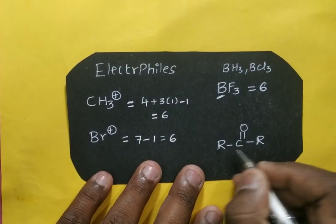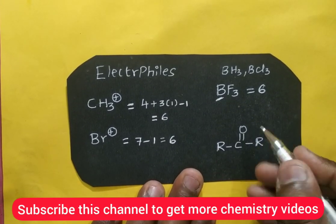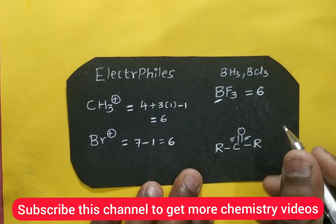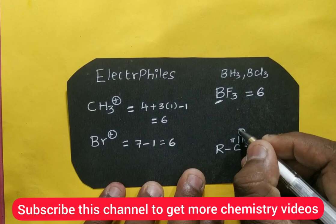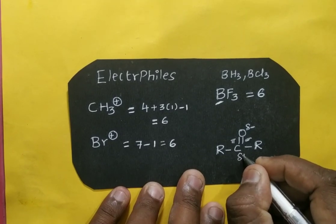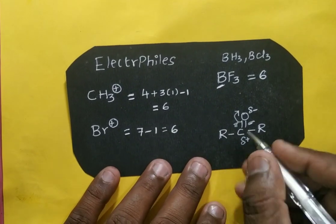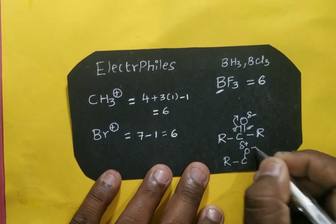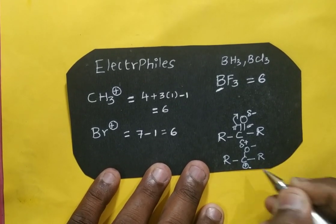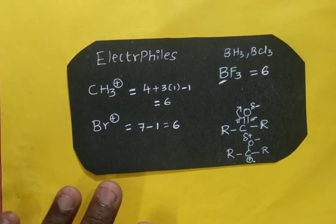Ketones also act as electrophiles. In a ketone, oxygen is highly electronegative and the C=O bond contains a sigma bond and a pi bond. The pi bond is easily breakable. Due to oxygen's electronegativity, it acquires a slight negative charge (δ⁻), leaving the carbon with a slight positive charge (δ⁺). The pi bond can cleave, forming O⁻ and a carbocation center — this carbon acts as the electrophilic center.